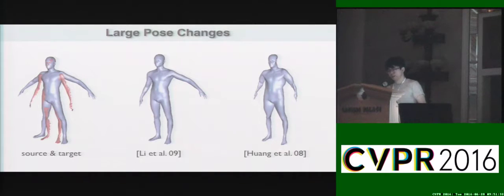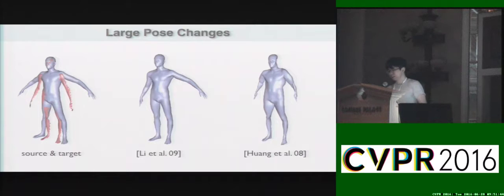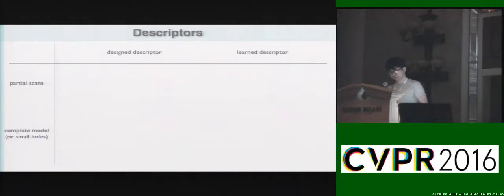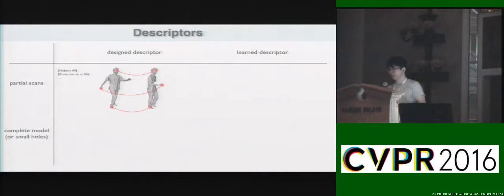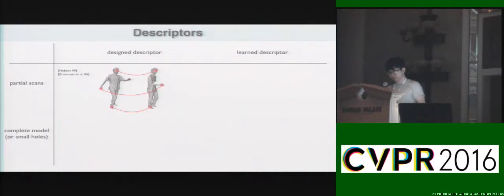In such a case, a more proper way to find correspondence is to define a local descriptor on every point on the mesh and use a matching scheme to find the correspondence. Of course, we can first define the descriptors based on the local property of the mesh so that you can match the shape of your hand to the shape of your hand on the other mesh. Such a method may get confused by symmetry or ambiguity problems, therefore the performance is not guaranteed.